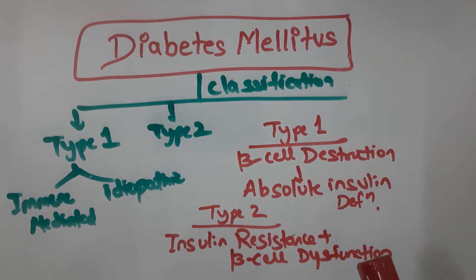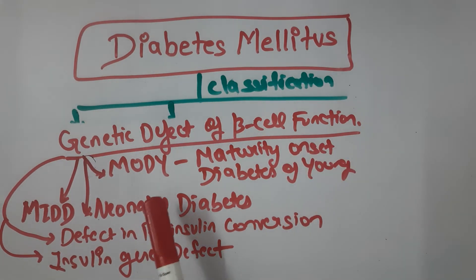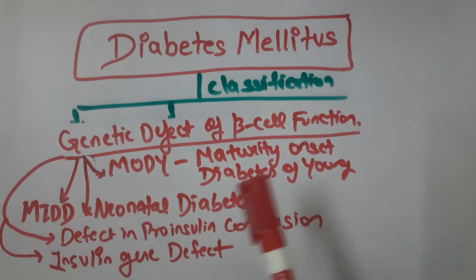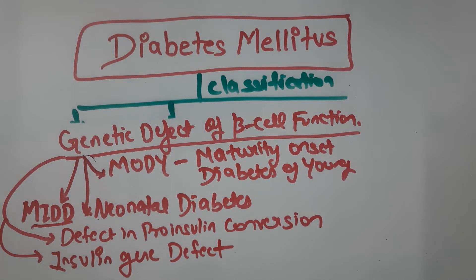There are other types of diabetes mellitus as well. The third type involves genetic defects of beta cell function, which includes MODY, MIDD, neonatal diabetes, defects in pro-insulin conversion, or insulin gene mutation. Neonatal diabetes is due to mutations in KCNJ11 and ABCC8. MIDD is maternally inherited diabetes and deafness, caused by a mitochondrial DNA mutation.